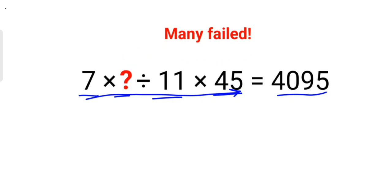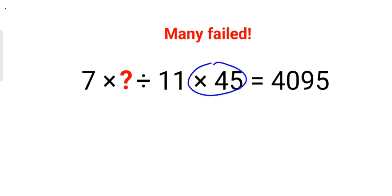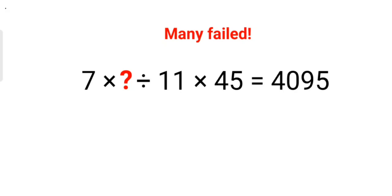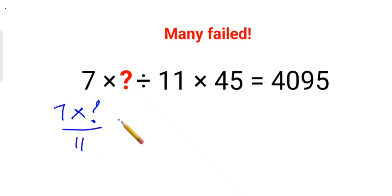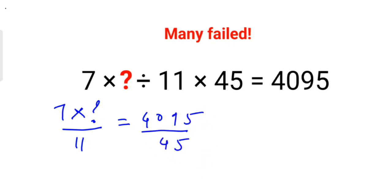So first, instead of this multiplying of 45, we will divide by 45 on both sides. Your next step would look like: 7 into question mark divide by 11 equals to 4095 upon 45.